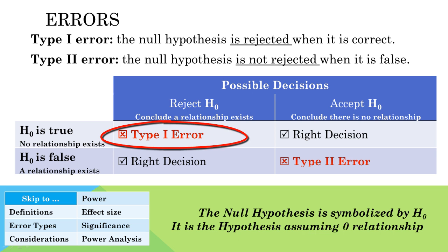A type 1 error occurs when the researcher mistakenly rejects the null hypothesis. If the null hypothesis is rejected, it means that the researcher has found a relationship among variables. So a type 1 error happens when there is no relationship but the researcher finds one.